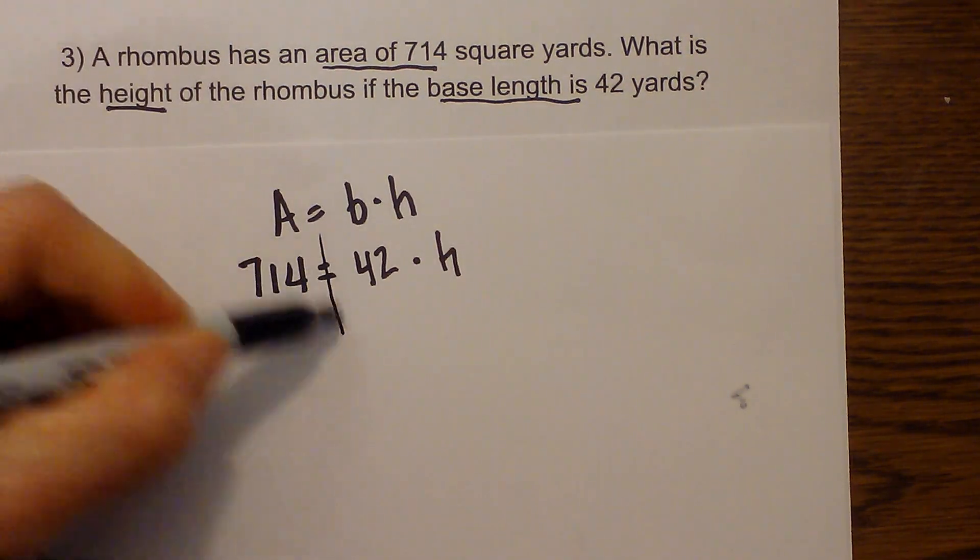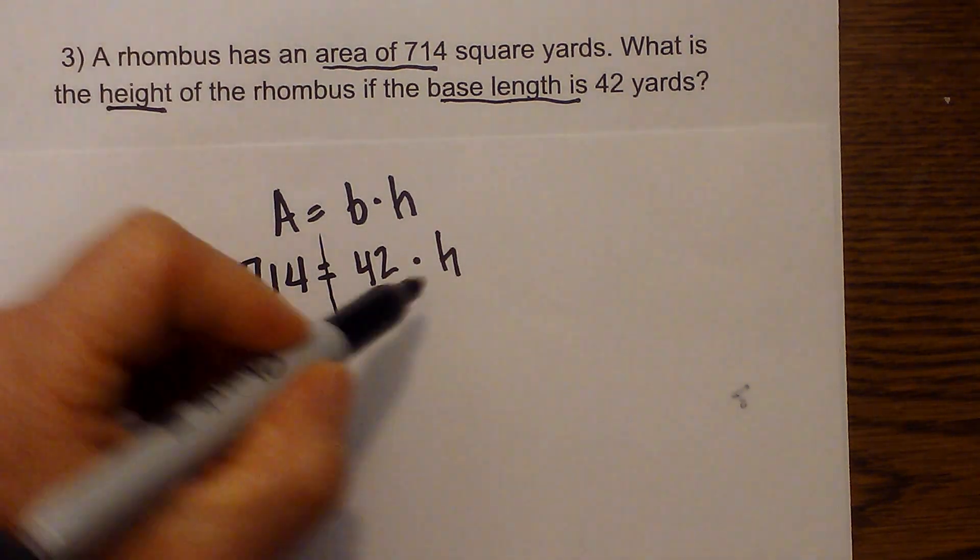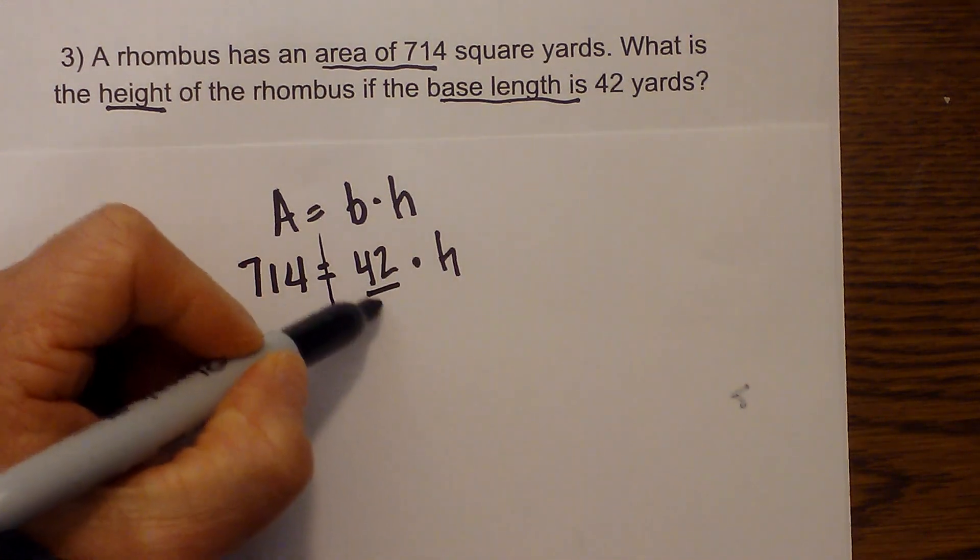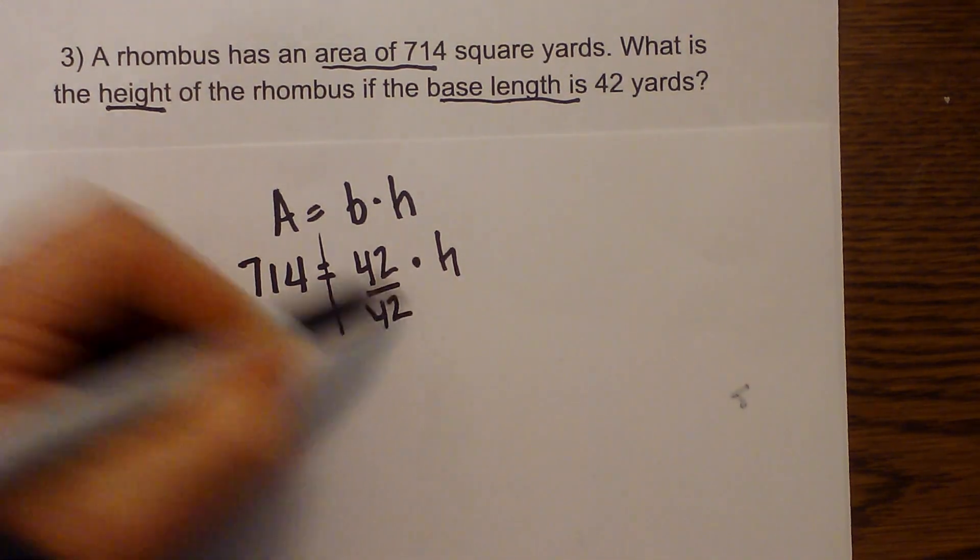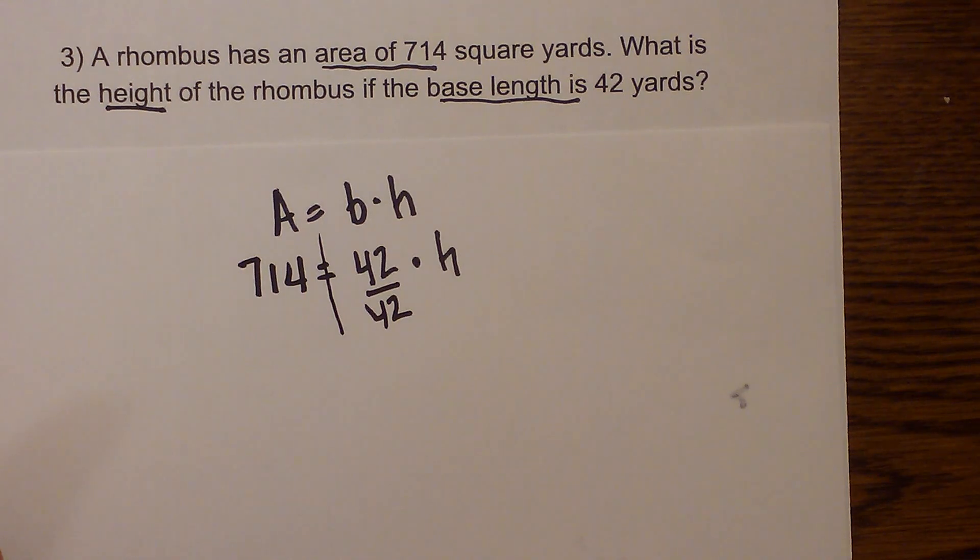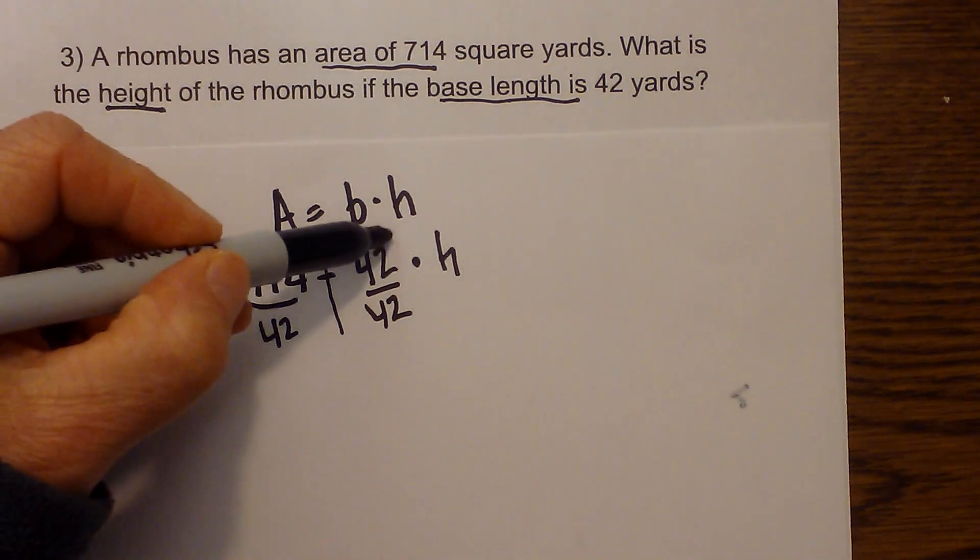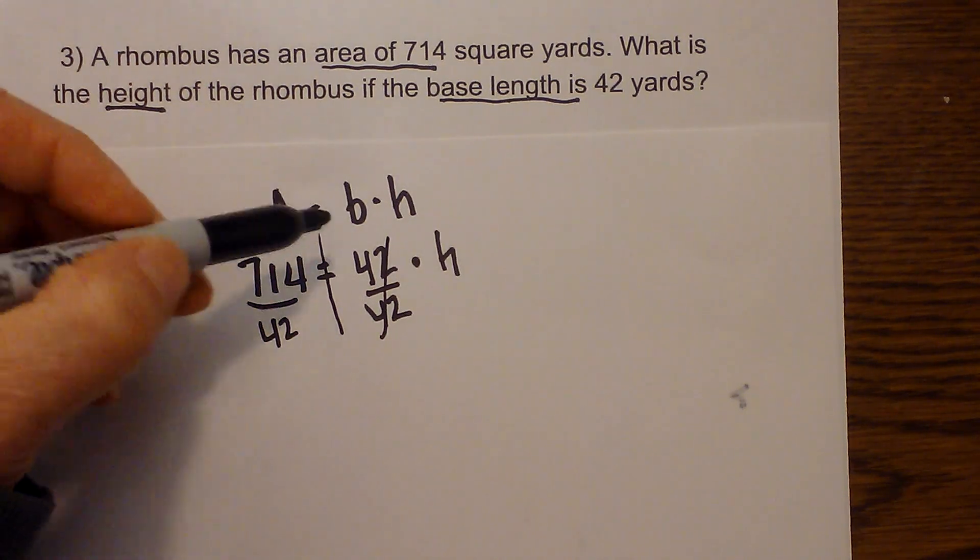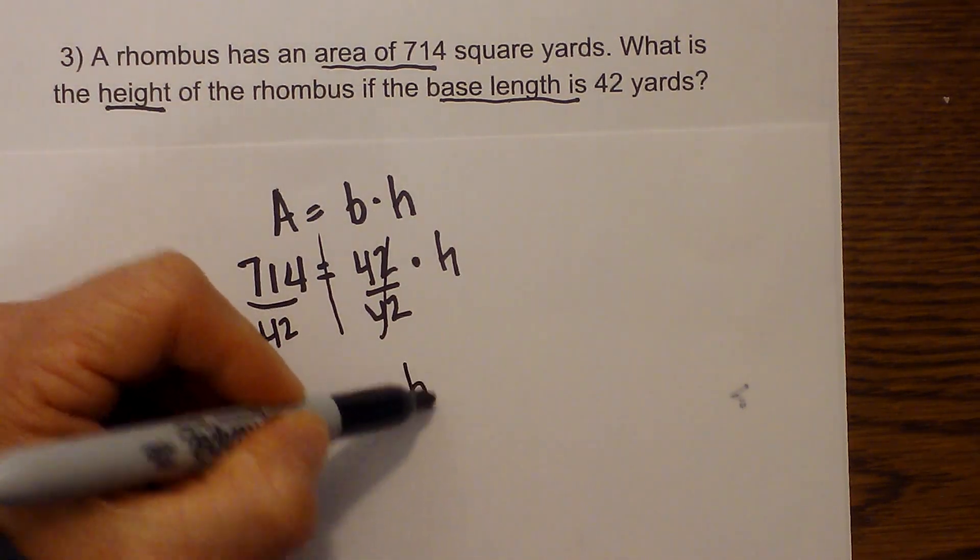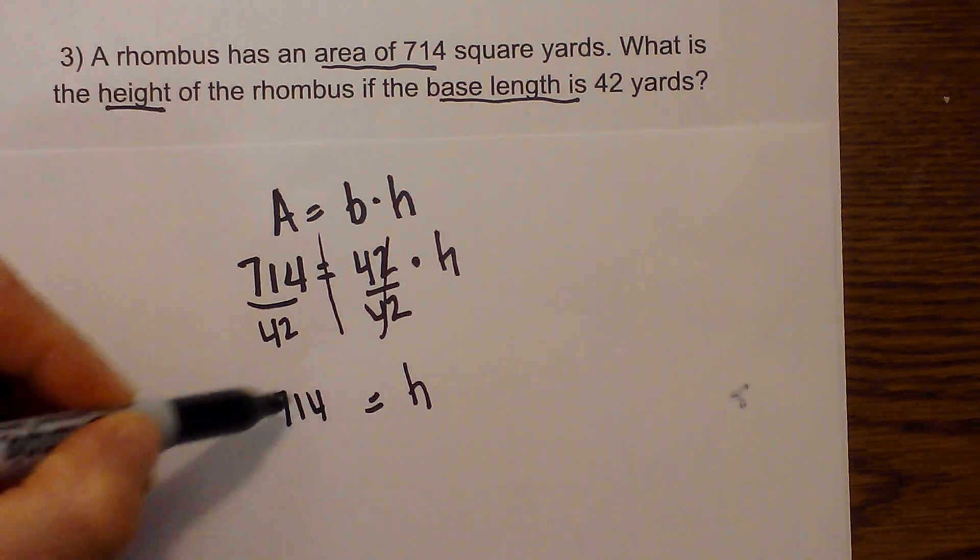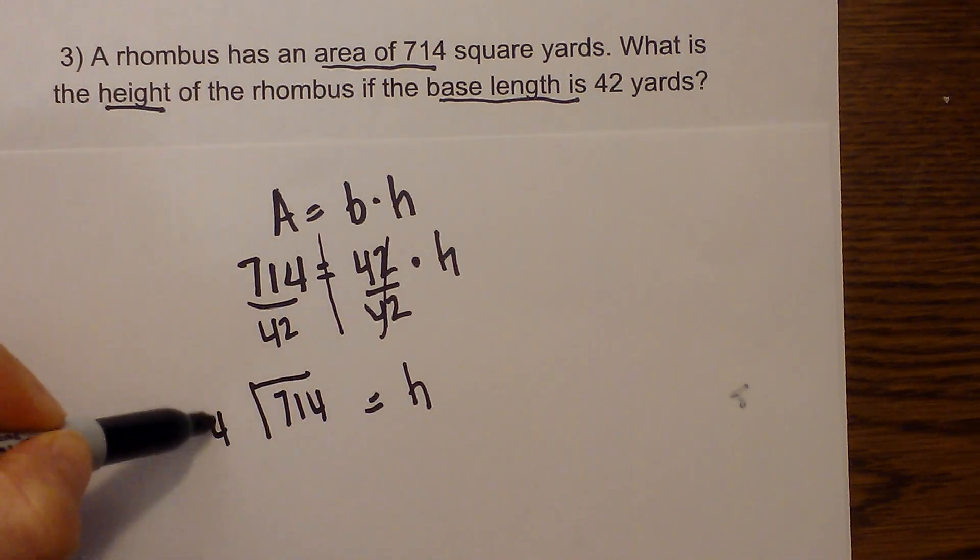So now I am just solving a one-step equation. I will draw a line down the middle. I have multiplication. So to undo multiplication I use the inverse operation which is division. So I will divide each side by 42, 42 divided by 42 will be 1 so that is going to cancel. So I have h is equal to 714 divided by 42.